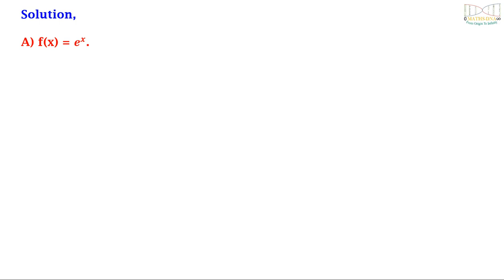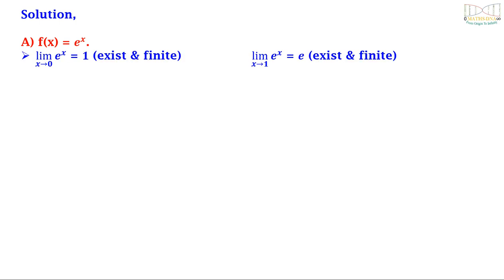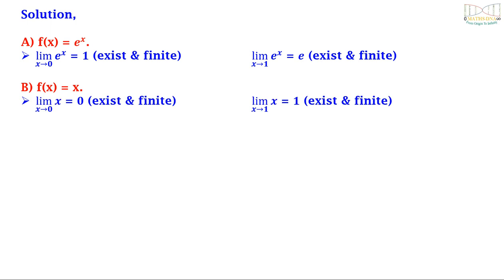Solution. For option A, f(x) = e^x: the limit as x tends to 0 of e^x equals 1, which is existing and finite; and the limit as x tends to 1 of e^x equals e, which is also existing and finite. Therefore option A is true. For option B, f(x) = x: the limit as x tends to 0 of x equals 0, existing and finite; and the limit as x tends to 1 of x equals 1, also existing and finite. So option B is true.